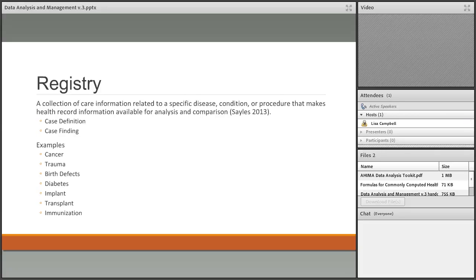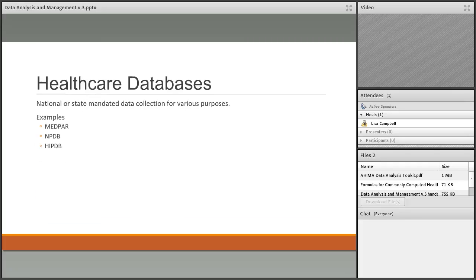The third type of secondary data source is a healthcare database — federal or state-mandated databases requiring facilities to collect and submit specific information. One example is MEDPAR, which is billing data on Medicare recipients for inpatient care; facilities must export that data directly to the federal government's database for every Medicare patient served. Another example mentioned is the National Practitioner Data Bank.